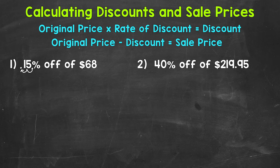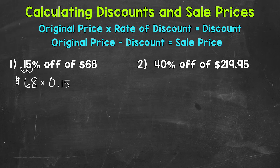Once we have that decimal, we take our original price and multiply it by that decimal. So our original price is $68 and we multiply that by 0.15. If you're using a calculator with a percent button, you can also do $68 times 15% — make sure you hit the percent button, not just 68 times 15. Both of those are equivalent and will give you the same correct answer.